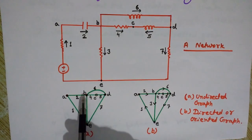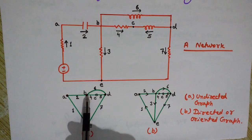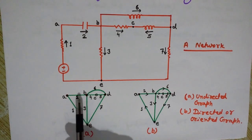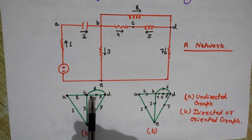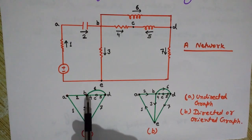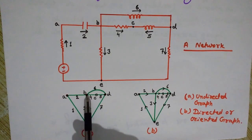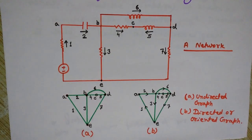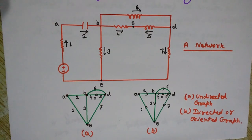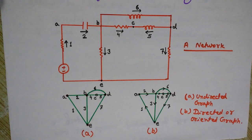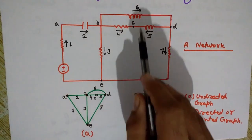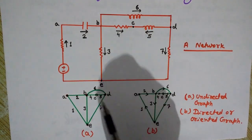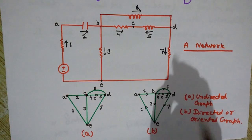And what are nodes? When two or more branches meet at a place, we call it a node. Here you can see that at this place, branches number two, six, four and three meet. So this is node B. So a graph is simply a representation or geometrical interconnection of the elements of a network.